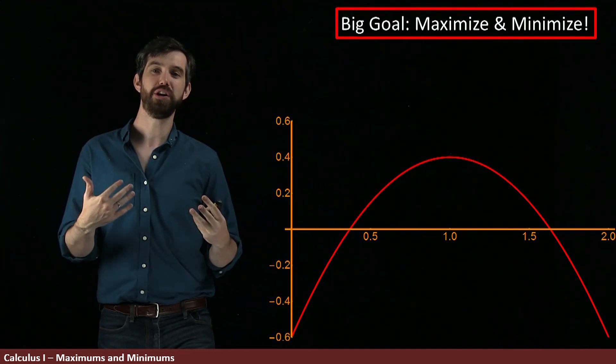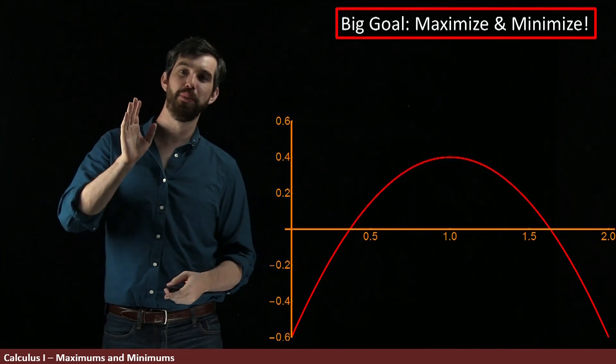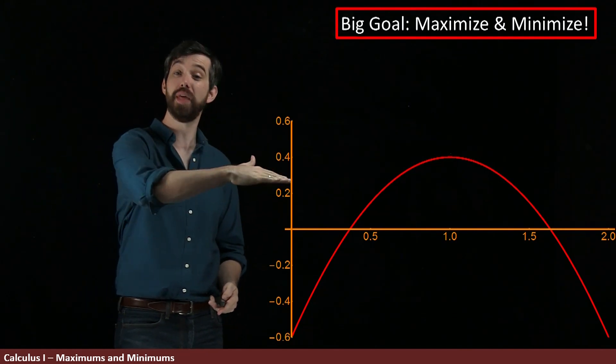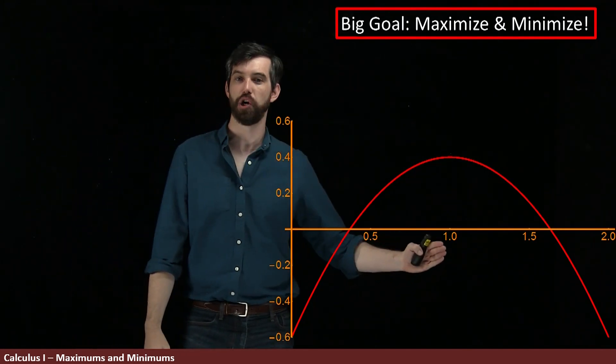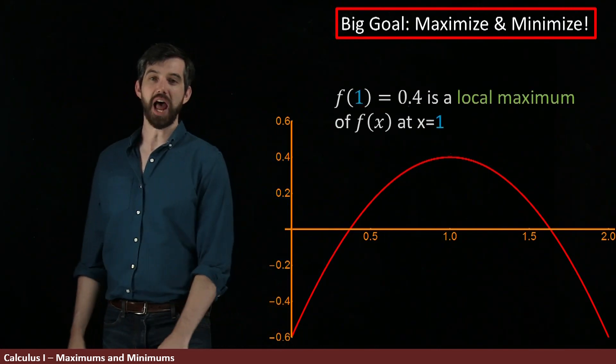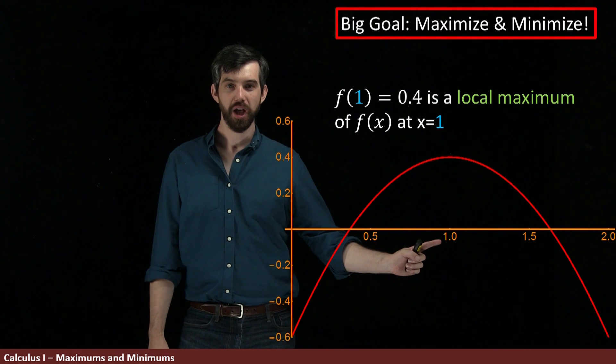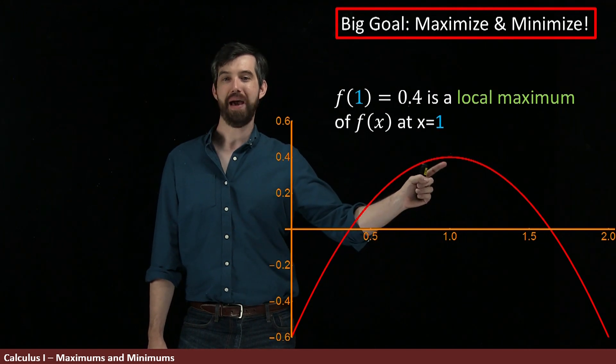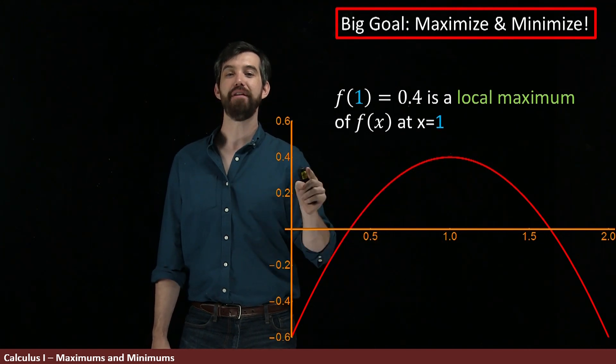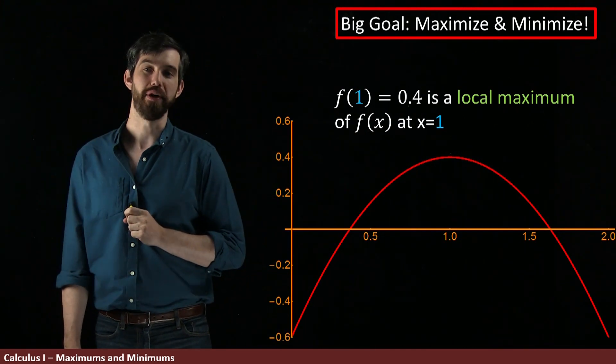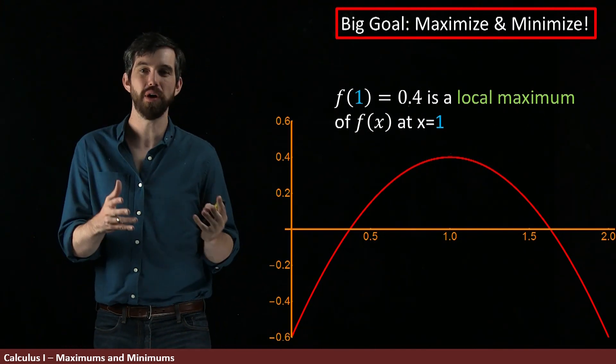And in particular, we're going to talk about the maximum value as being the height, and this is going to occur at some particular point. So for instance, I will say that at the point x equal to 1, we get to a local maximum value of f of x equal to 0.4.